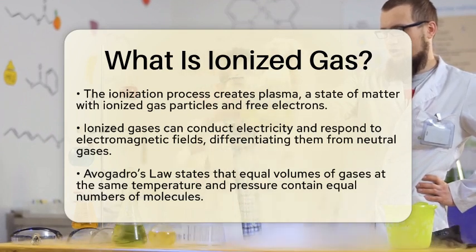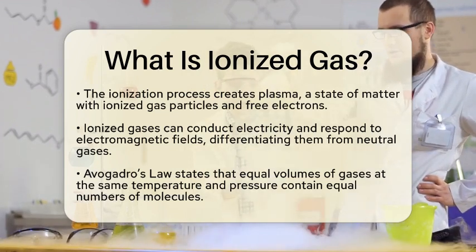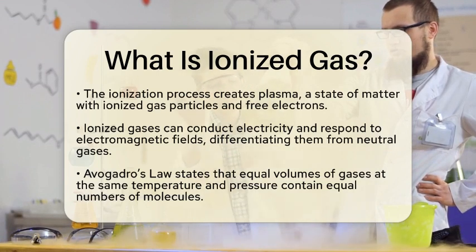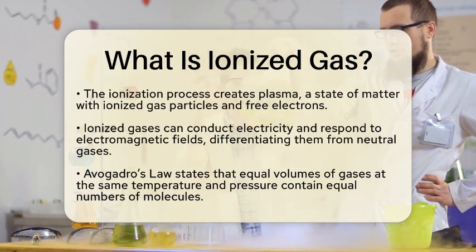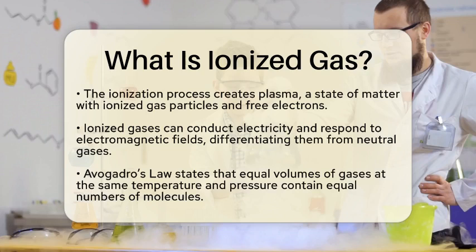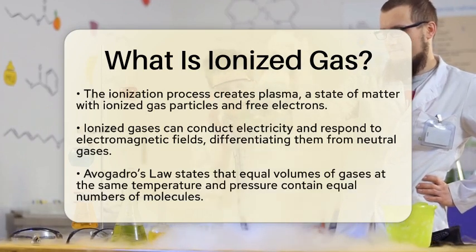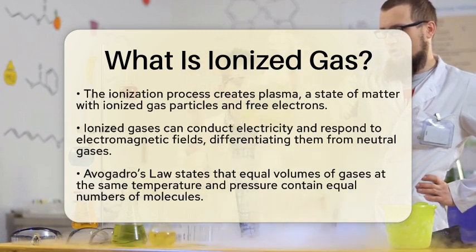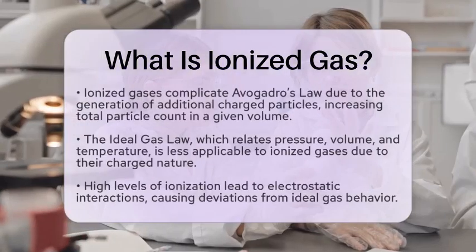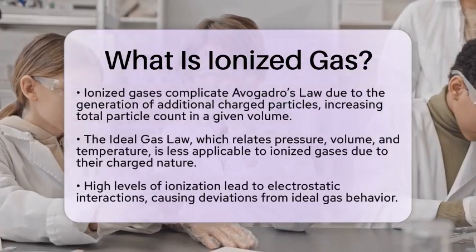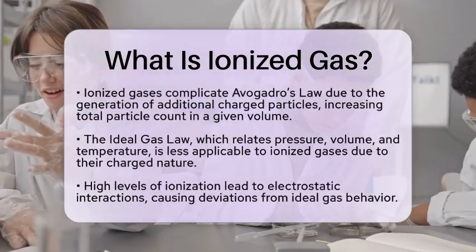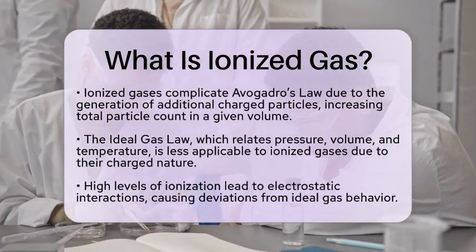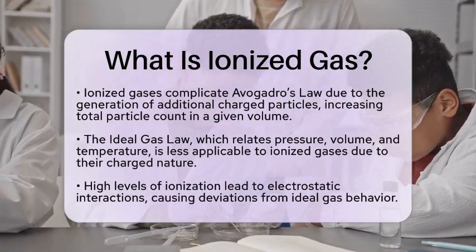Ionization generates additional charged particles, which increases the total number of particles in a given volume. This affects the relationships between gas pressure and volume described by the ideal gas law, represented as pressure times volume equals the number of moles times the ideal gas constant times temperature (PV = nRT). The ideal gas law assumes neutral, non-interacting particles, making it less applicable to ionized gases. At high levels of ionization, electrostatic interactions between charged particles can cause deviations from ideal behavior.